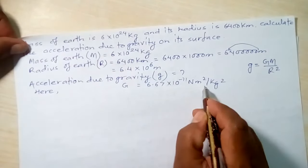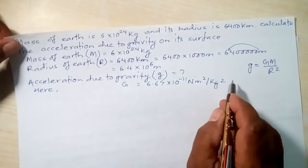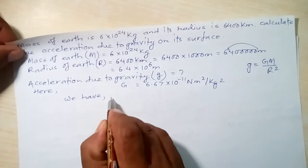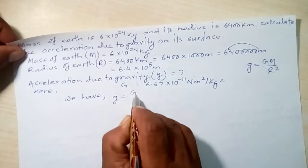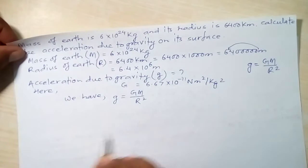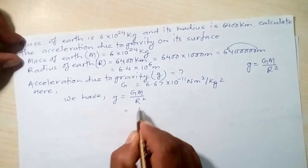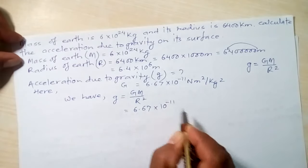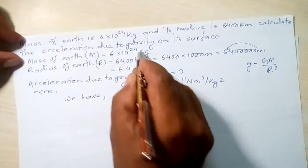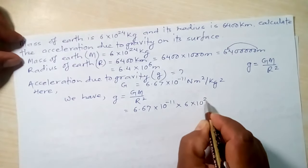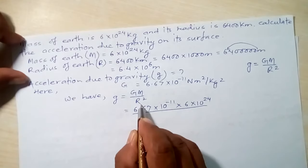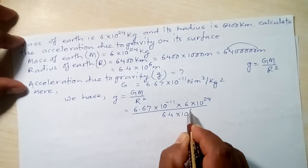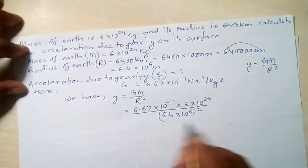Now using the equation small g equals capital G times capital M divided by R squared, we substitute the values: G is 6.67×10⁻¹¹, capital M is 6×10²⁴, and it is divided by the radius 6.4×10⁶ whole squared.